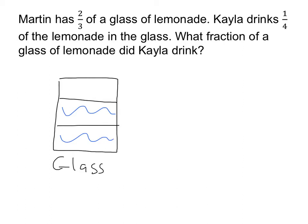Kayla is going to drink a quarter of the lemonade in the glass. That means we're going to take this lemonade in the glass, break it up into four pieces by drawing three vertical lines, and then Kayla is going to drink one of those pieces. Right here is the lemonade that Kayla is going to drink.